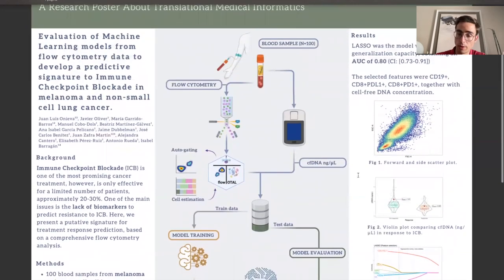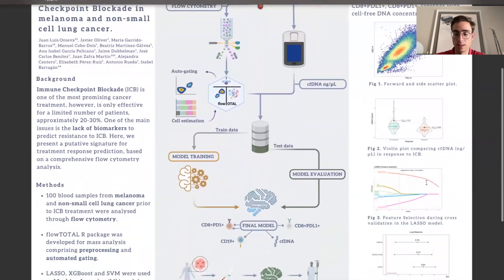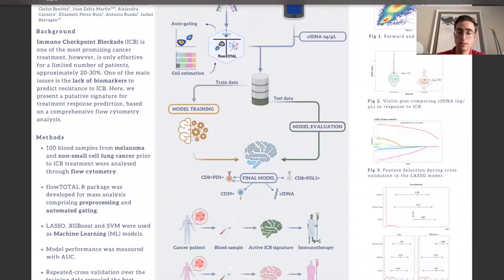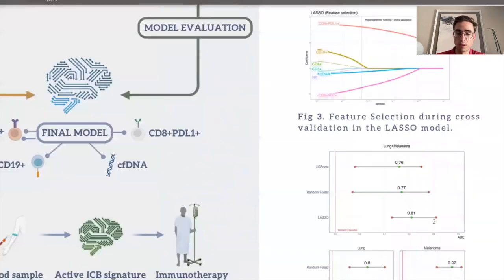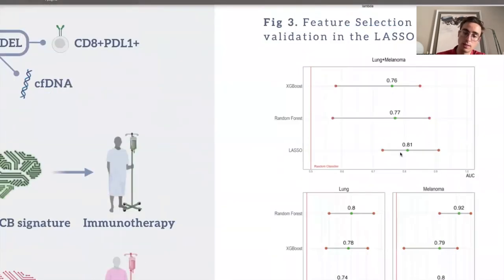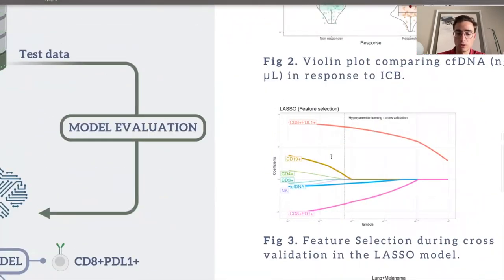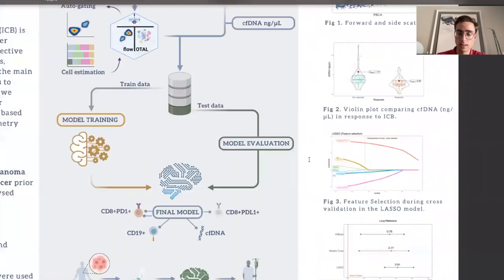Among the models we evaluated, Lasso exhibited the greatest generalization ability, achieving an impressive AUC of 0.80 with a confidence interval between 0.73 and 0.91. The features identified as significant contributors to the predictive signature were cell-free DNA concentration, CD19, CD4, PDL1, CD4, and PD1.